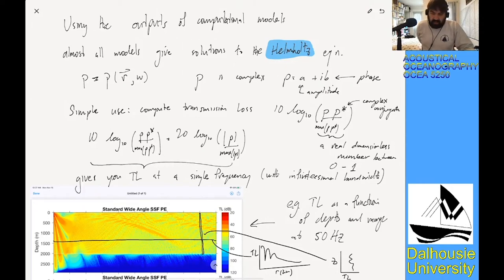That's a complex value that has some amplitude and some phase. We always throw that out by computing transmission loss, which is the pressure times its complex conjugate, so the phase information goes away. Then we normalize it even more - now we're looking at something that's really just a number between 0 and 1. We take 20 log 10 of that, and that gives us our transmission loss at a single frequency.